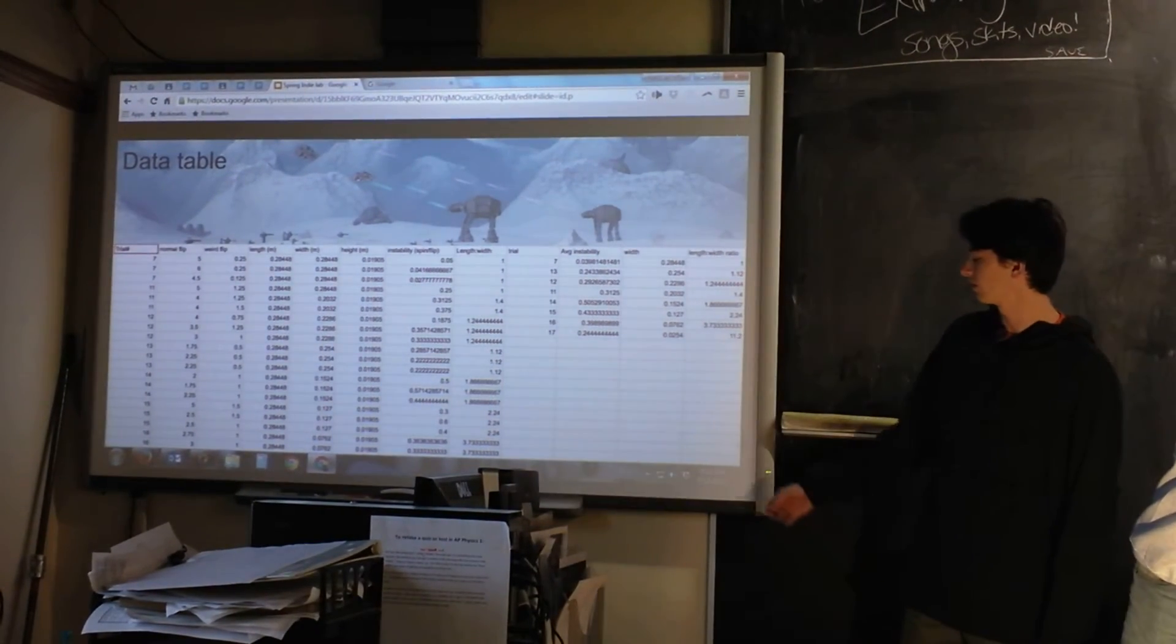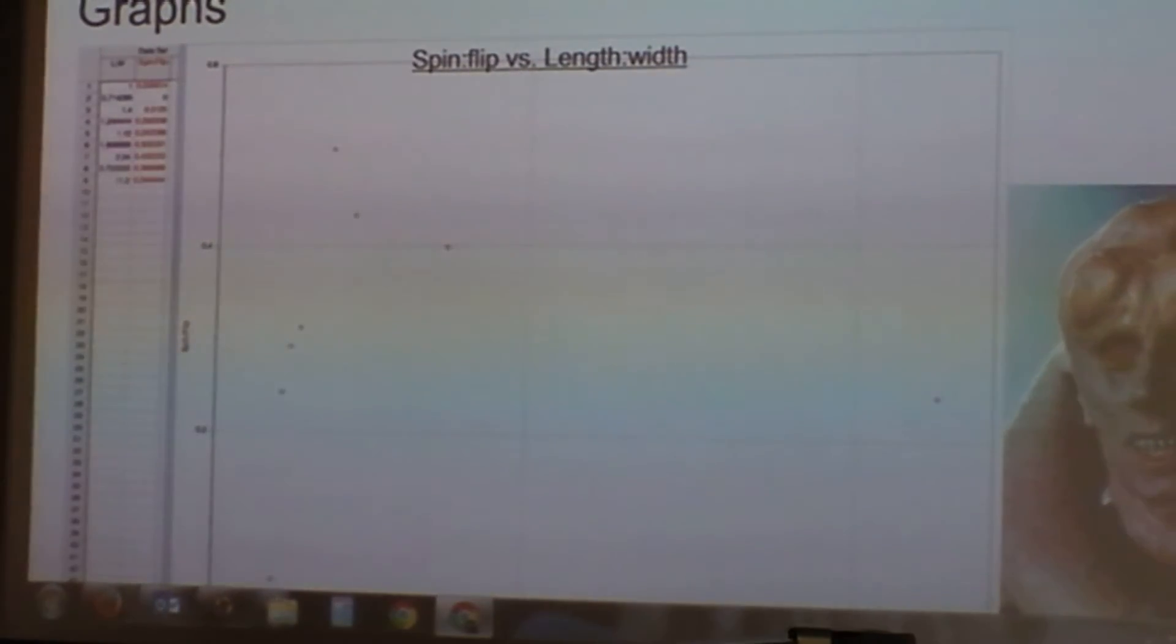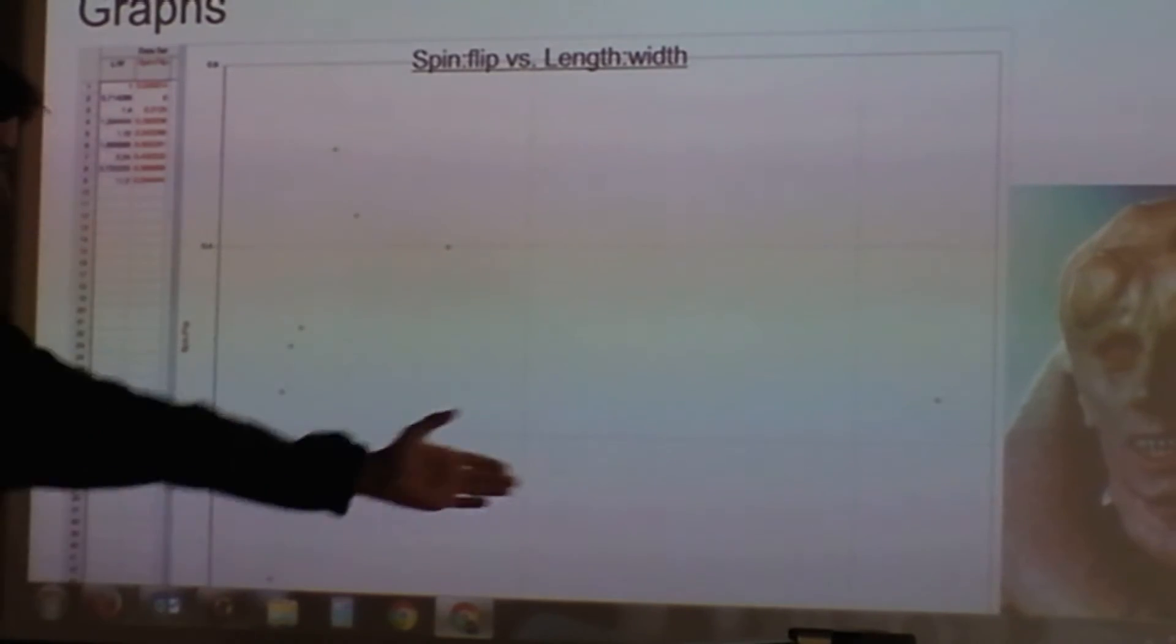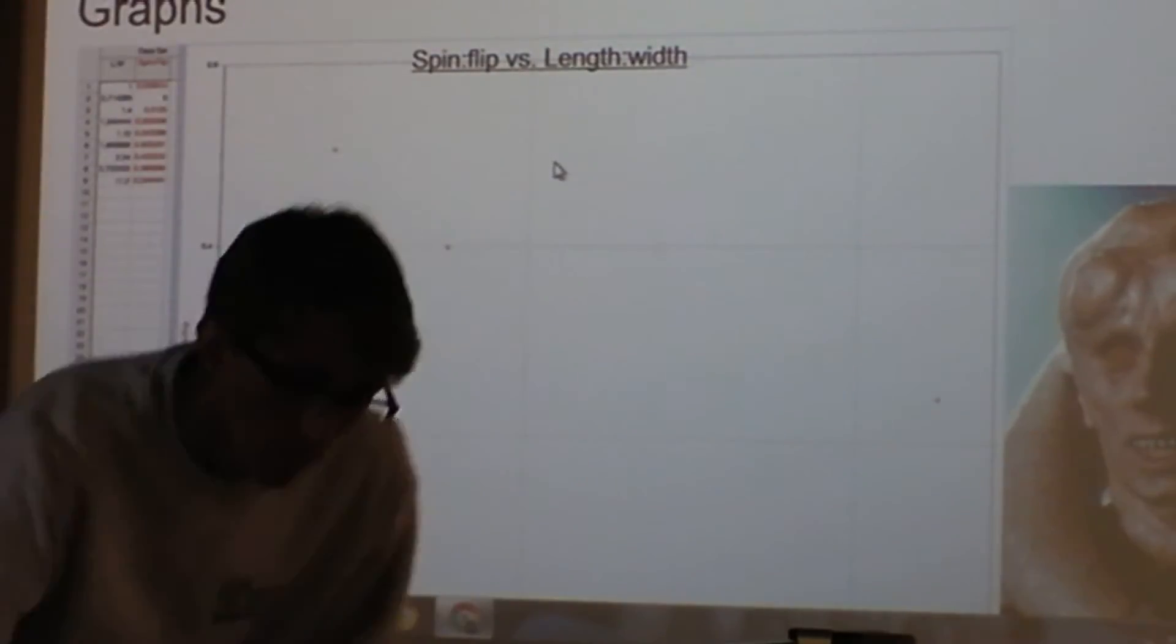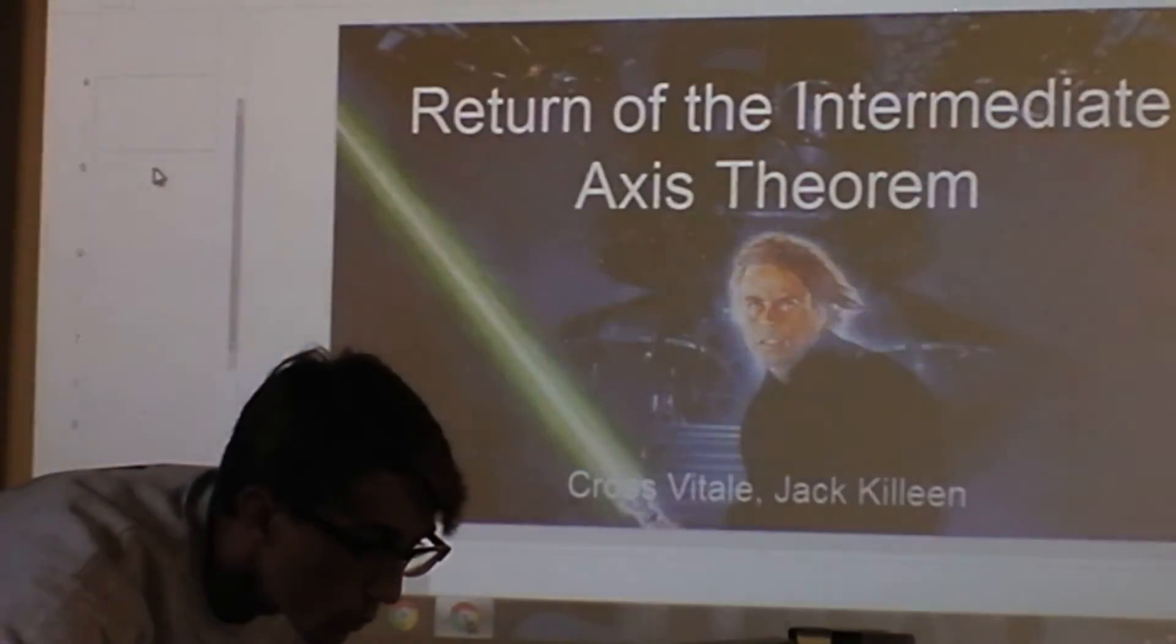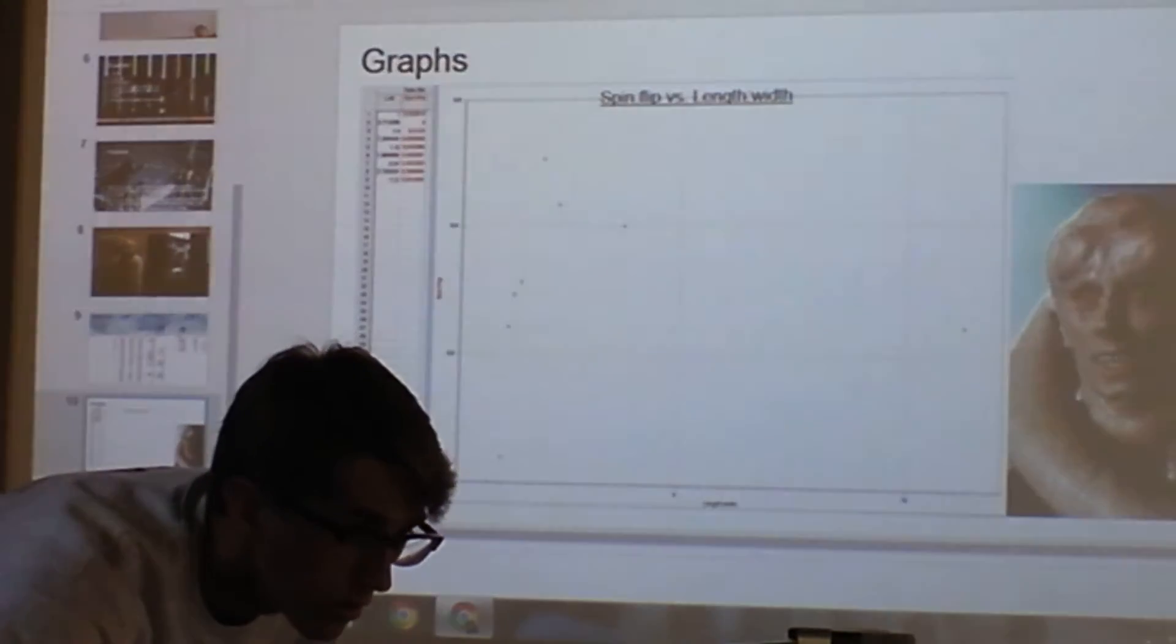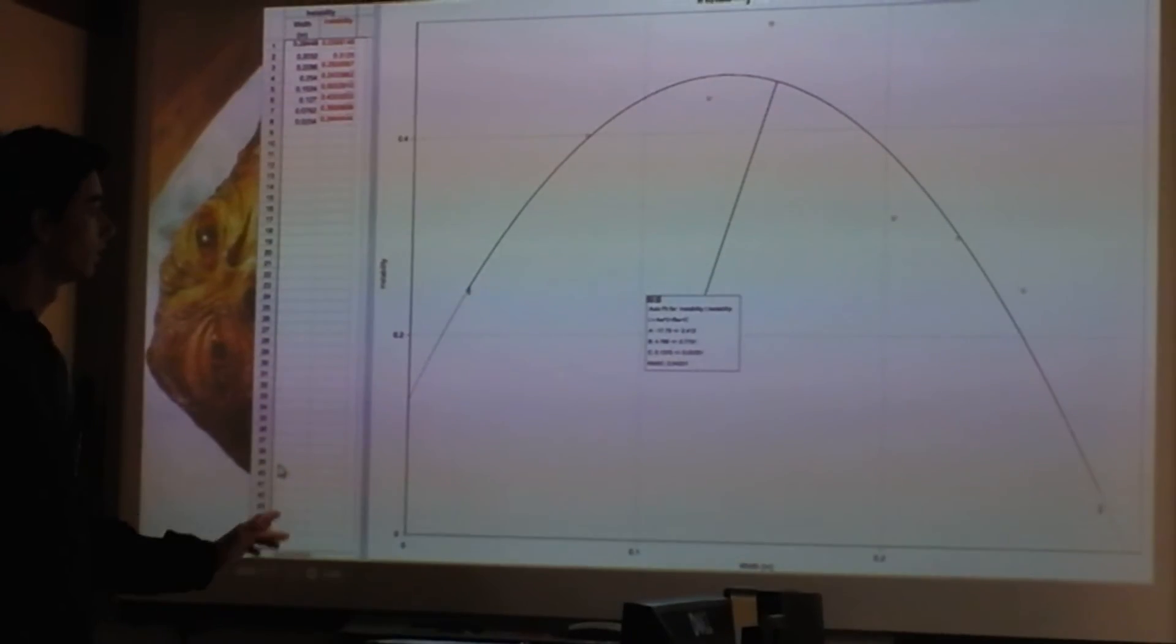And I guess I'll just show you the graph. Yeah, so for the length to width theory, we kind of came out with nothing. Spin to flip versus length to width, we didn't find anything. It doesn't look like there's a huge trend. There's a formatting issue, I can't see at the bottom of the graph. I'm sorry. I think it's not in full screen presentation mode anymore.